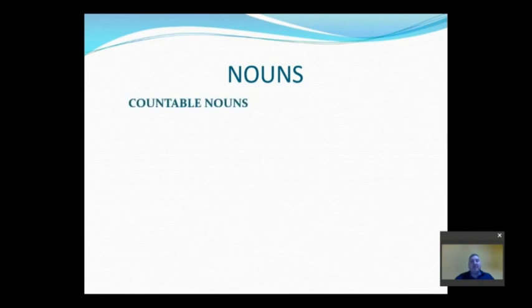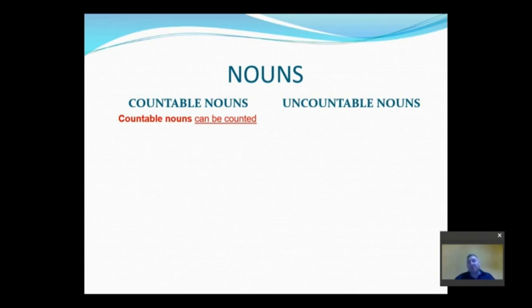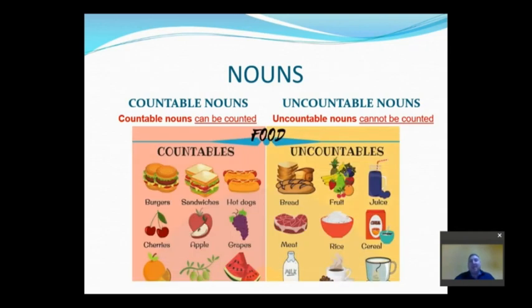Nouns can be countable and uncountable. But what does countable mean? Easy. It means that countable nouns can be counted. And of course, uncountable nouns cannot be counted.